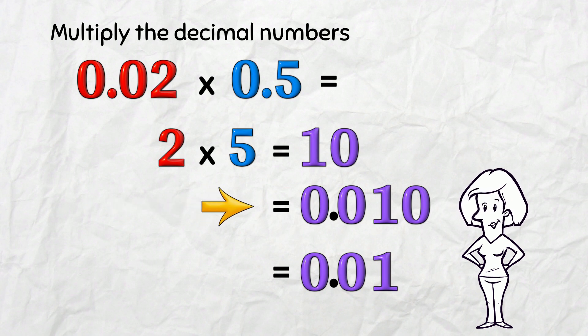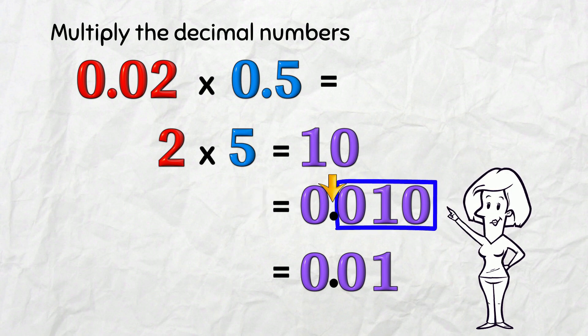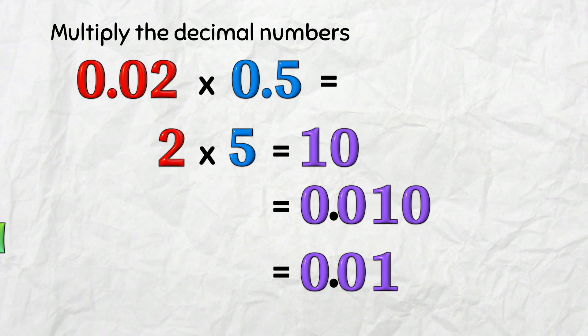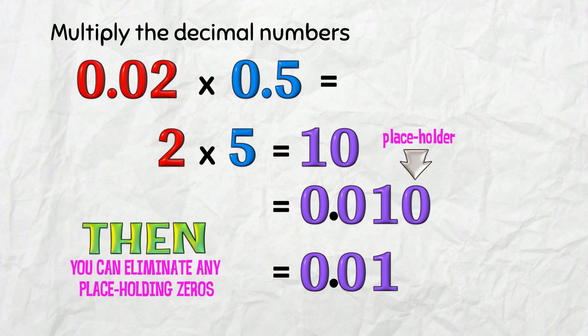Once you've done this step of putting the decimal point in the right place with the right number of decimal figures, then you can eliminate any zeros you've got just hanging around at the end!